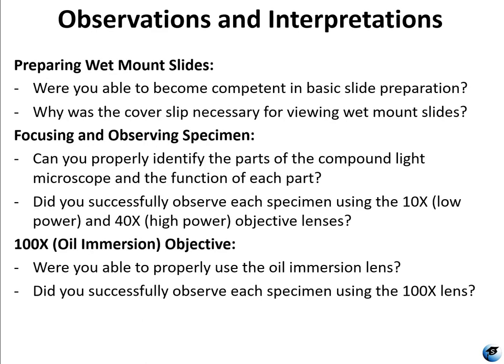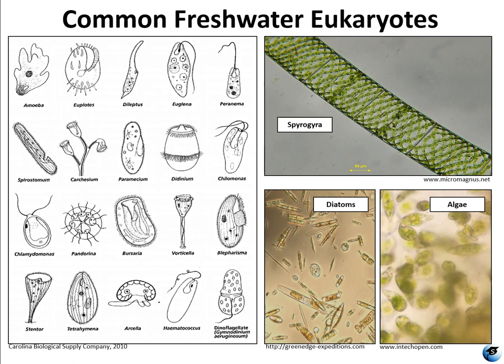For your observations and interpretations: were you able to do the wet mounts, and did you have any problems? Do you understand why a cover slip was necessary for these slides? Were you able to properly identify all of the parts and use them? Could you actually observe each specimen at each magnification? Were you able to properly use the 100x objective? This lab is fully devoted to teaching you how to use the microscopes — it seems simple but it's actually quite difficult, and many people struggle in lab three because you're viewing things much smaller than what you may have been accustomed to in the past.